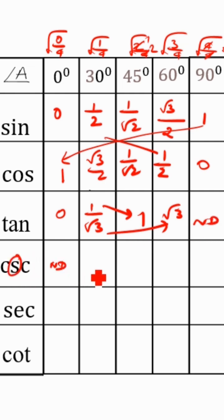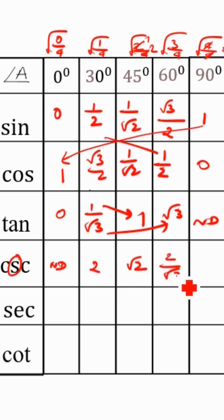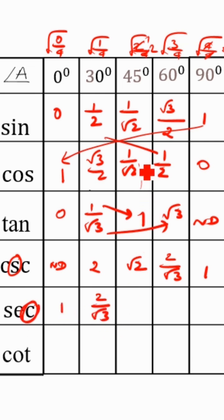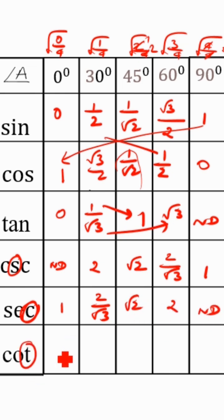Cosec means 1 by sin. 1 by 0 is not defined, 1 by 1 by 2 is 2, root 2 — reverse it, you have to write the reverse — 2 by root 3, 1 by 1 is 1. Secant is 1 by cos: 1 by 1 is 1, 2 by root 3 — reverse this one, you have to reverse it — so root 2, 2, and 1 by 0 is not defined. Cot is 1 by tan: 1 by 0 is not defined, 1 by root 3 is root 3, 1 by 1 is 1.